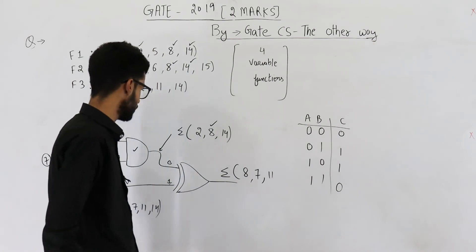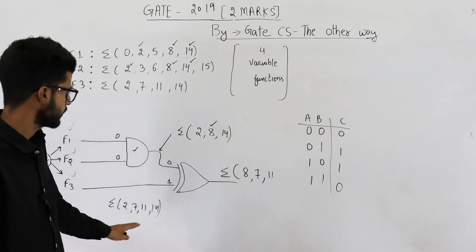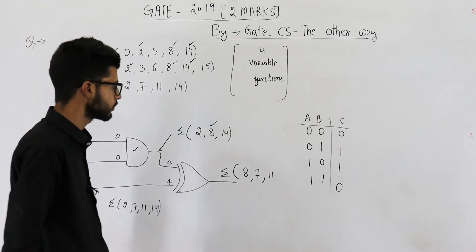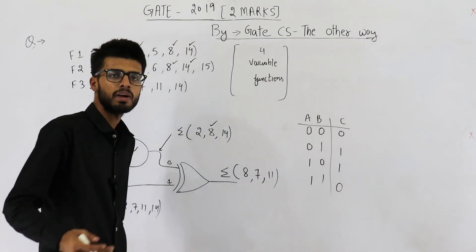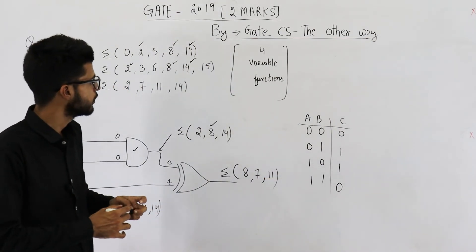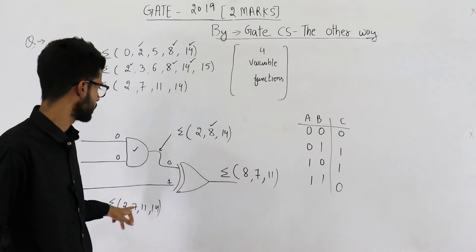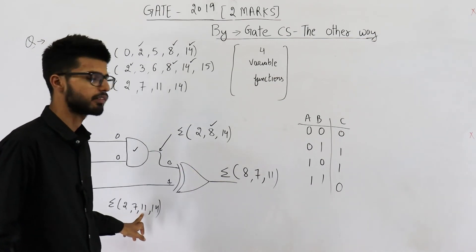I think that's all, so your output is 8, 7 and 11. Now you might think we have considered only these numbers: 2, 8, 14, 7 and 11.